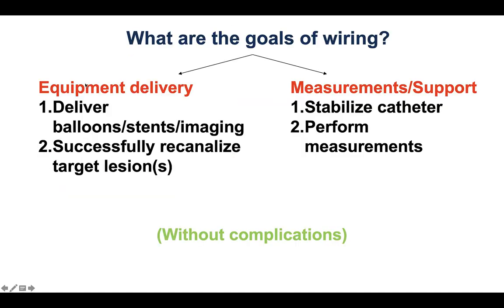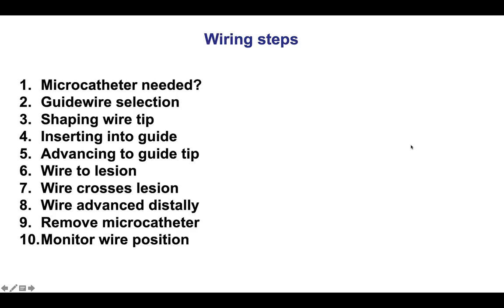Guide wire is not only critical for equipment delivery, but can also serve other functions. For example, it can help stabilize the guide catheter, and second, perform measurements in the case of the pressure wire. Wiring is performed in 10 steps, and each step will be discussed one by one.